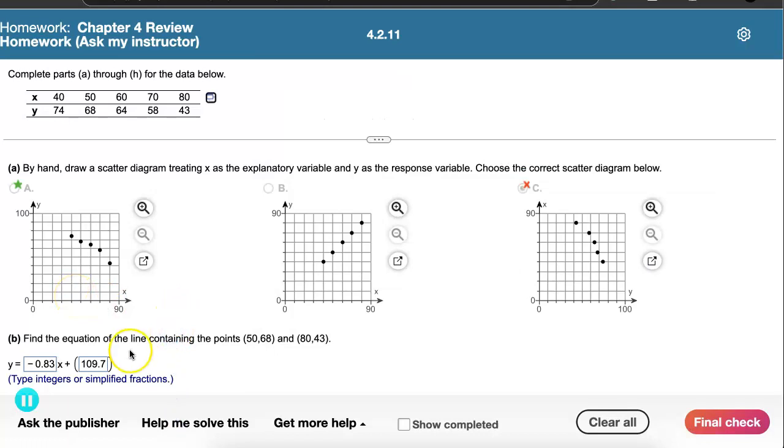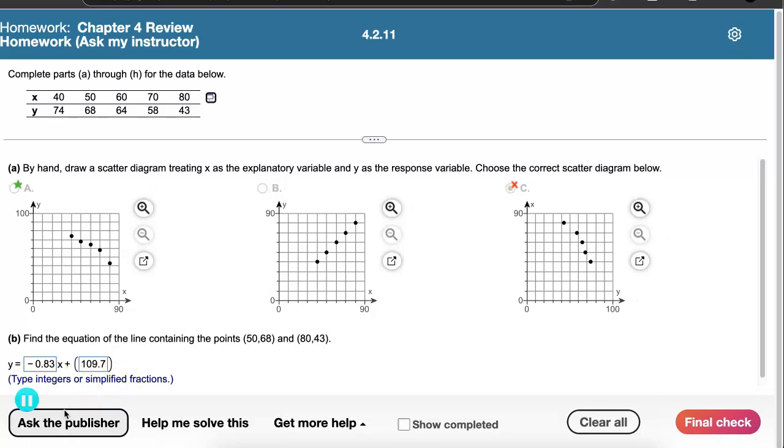The next part of this problem asks us to find an equation of a line containing two specific points. So because it's just the two points and it's not all of the data, this is something I'm going to do by hand. One more thing I want to note here is that under that equation, it's telling us to either type integers or simplified fractions. So we're going to be as precise as possible, not changing our fractions to decimals.